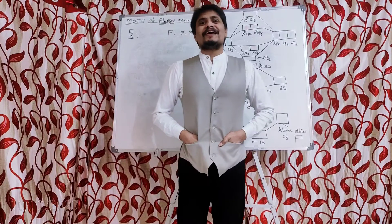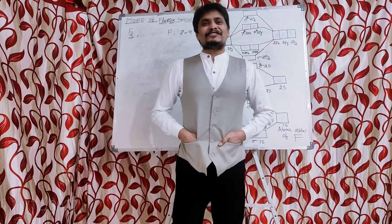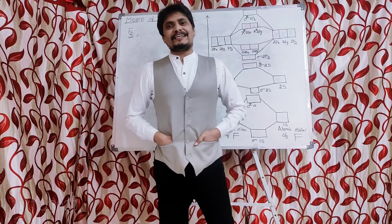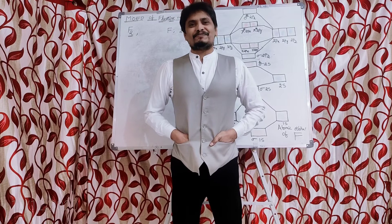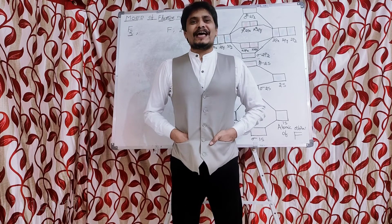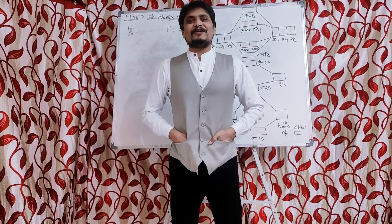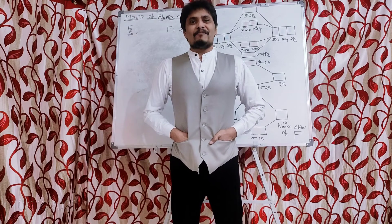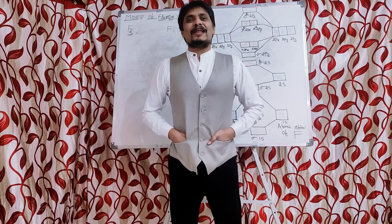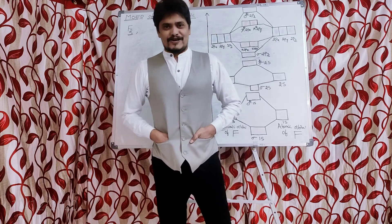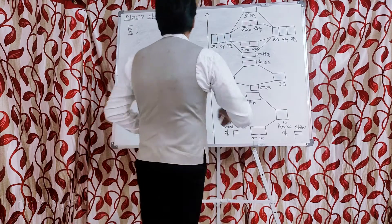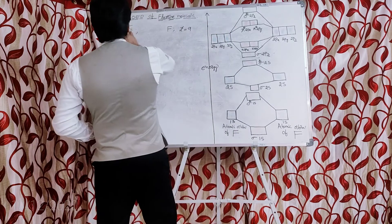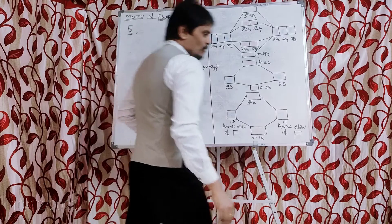Students, as part of Engineering Chemistry, first unit — Molecular Structure and Theories of Bonding — today I am going to explain the molecular orbital energy diagram of the fluorine molecule. F2 is the fluorine molecule.